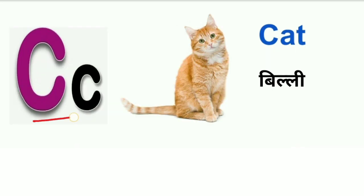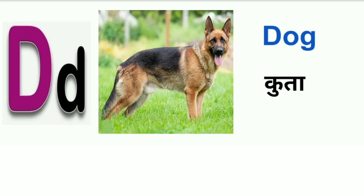C for cat. Cat means billi. D for dog. Dog means kutta.